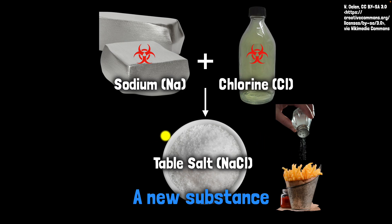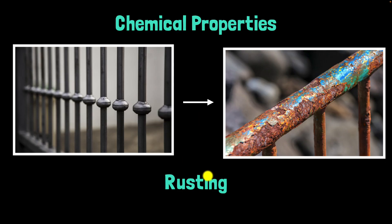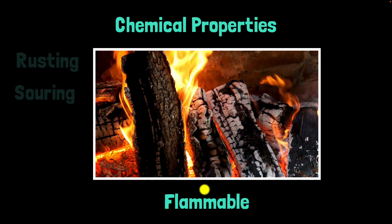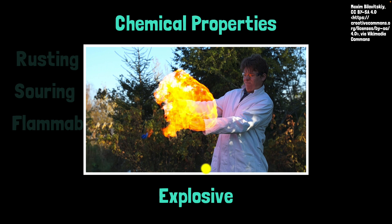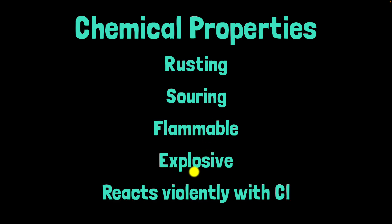This is a chemical change and a chemical reaction. Just like how we defined physical properties — properties you can measure without changing the identity of the substance — we can now define chemical properties. These are properties that can only be measured or observed by changing the identity of the substance. For example, the ability to rust is a chemical property: you can only measure it by making something rust, and when you do, the identity has changed. Other chemical properties include the ability to go sour, flammability, being explosive, and the ability to react violently with chlorine.